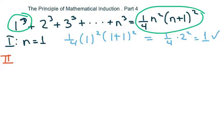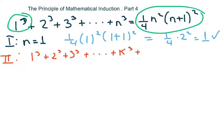Now we're going to check condition two. First we write everything with k: one cubed plus two cubed plus three cubed plus dot dot dot plus k cubed equals one-fourth k squared times (k plus one) squared.